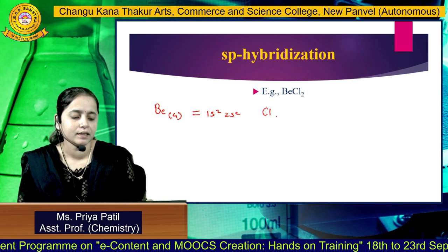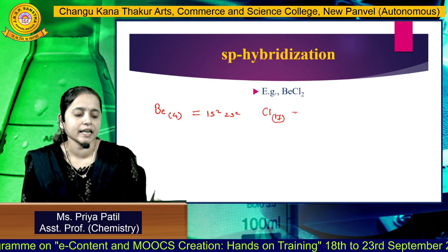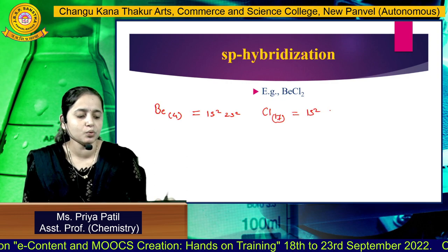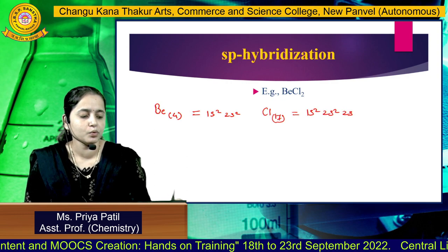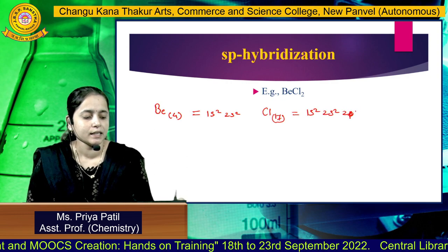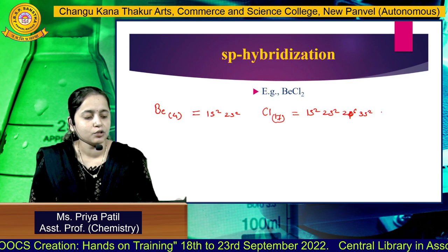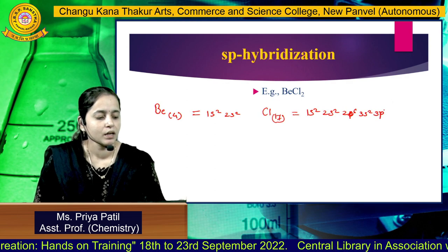The electronic configuration of Be is 1S2 and 2S2. The atomic number of Cl is 17, and its electronic configuration is 1S2, 2S2, 2P6, 3S2, 3P5.